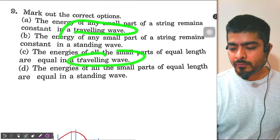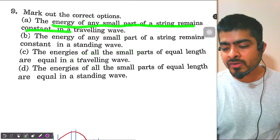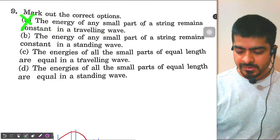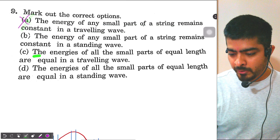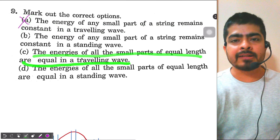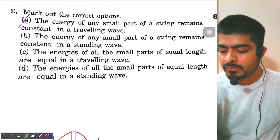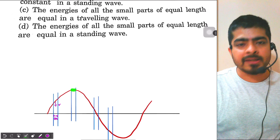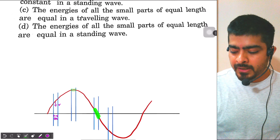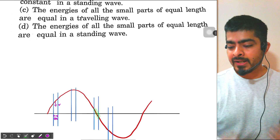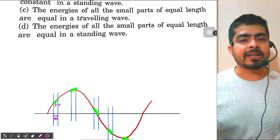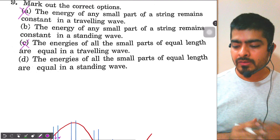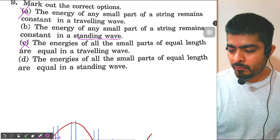Now let's evaluate the answer options for the travelling wave. Option A says energy of any small part of a string remains constant in a travelling wave — this is wrong, because at the amplitudes energy is zero. Option C says energies of all small parts of equal length are equal in a travelling wave — this is also wrong, because instantaneously some particles have zero energy while others have maximum energy. So both options are wrong.